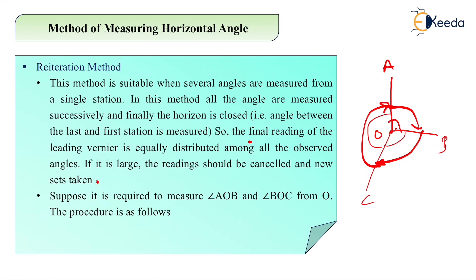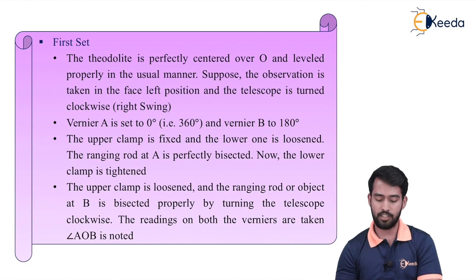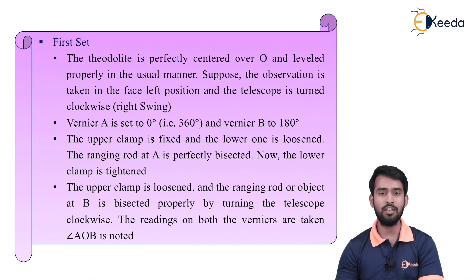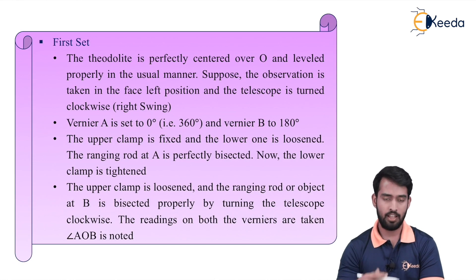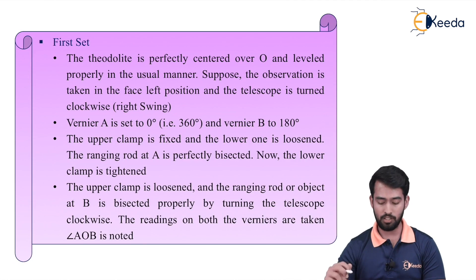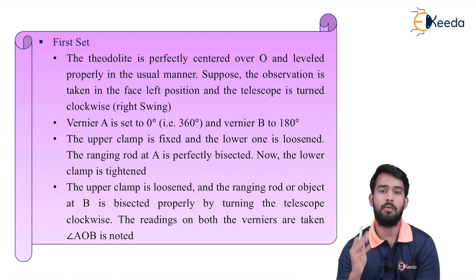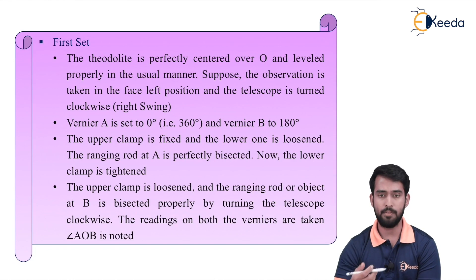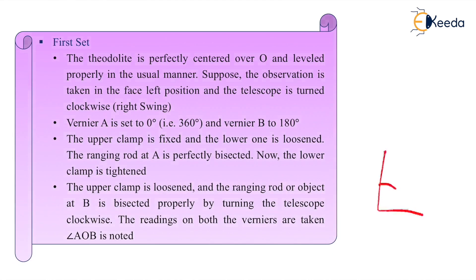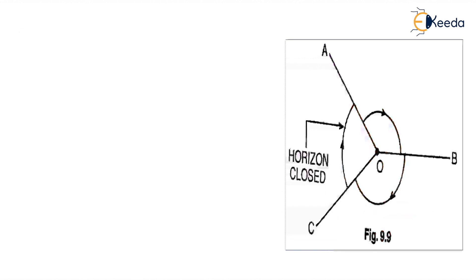Suppose we need to measure angle AOB and angle BOC from station O. The procedure for set one: the instrument is centered over O, leveling is done, and all temporary adjustments are completed. Vernier A is set to zero and vernier B to 180 degrees. The upper clamp is fixed and lower is loose. The ranging rod at A is bisected, then lower clamp is tightened. The upper clamp is loosened and object at B is bisected to get angle AOB. The telescope is always turned clockwise. Both verniers A and B are read and the angle is noted.